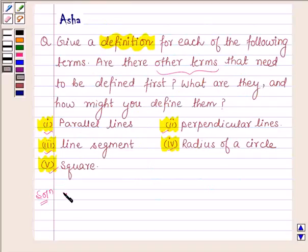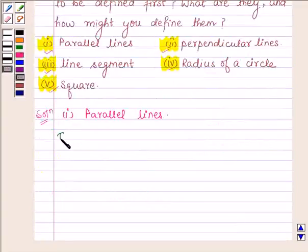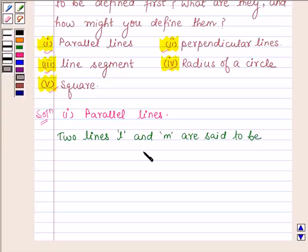First, let us define parallel lines. Two lines L and M are said to be parallel if first they are non-intersecting.